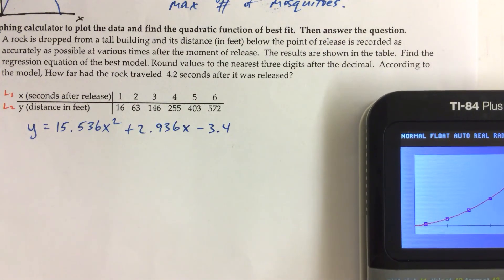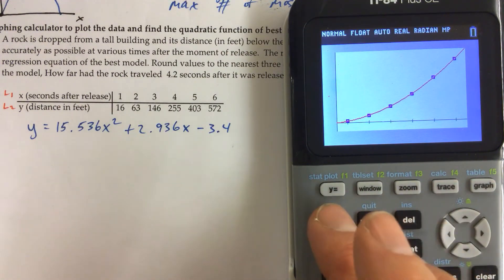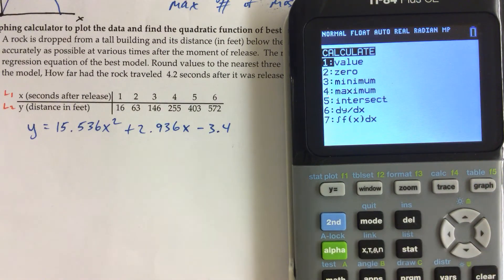And then, what we're trying to figure out here is, according to the model, how far had the rock traveled 4.2 seconds after it was released? So we want to figure out the value. We can do it two ways. We can do second, calculate, value, enter.